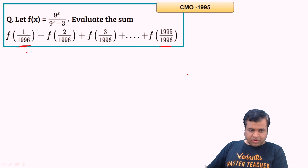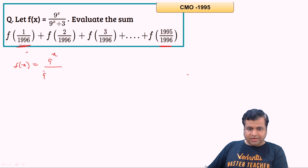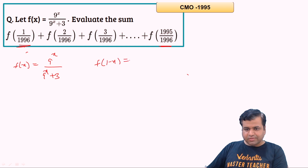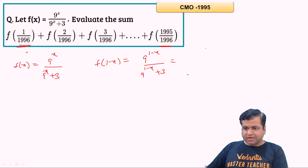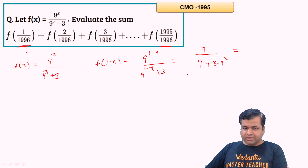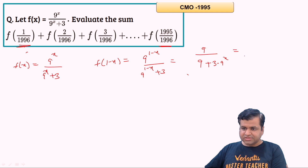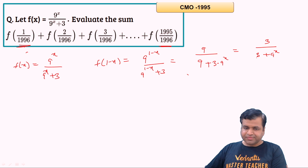f(x) = 9^x/(9^x + 3). Let's calculate f(1 − x): that will be 9^(1−x)/(9^(1−x) + 3) = 9/(9 + 3·9^x). Taking 3 common from numerator and denominator gives 3/(3 + 9^x).